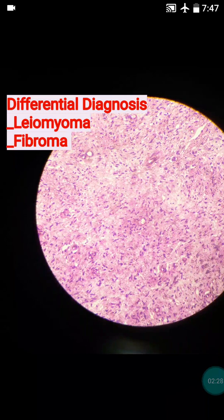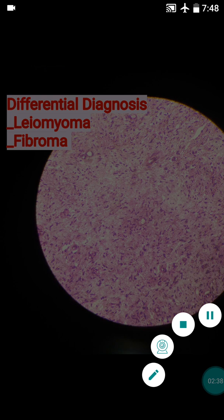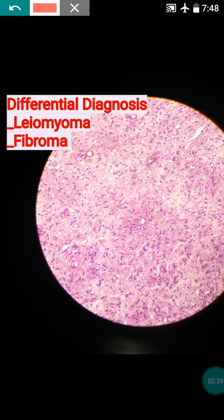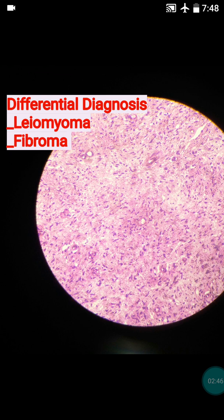In leiomyoma, the cells have abundant eosinophilic cytoplasm — that is the first differentiating point. The second and most important differentiating point is that in leiomyoma there is no collagen in between the proliferated cells, while in fibromatosis some form of collagen is always present. In leiomyoma, collagen is absent. These two points differentiate leiomyoma from fibromatosis.